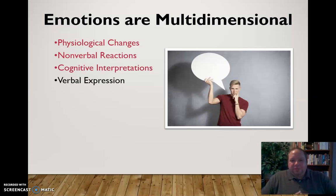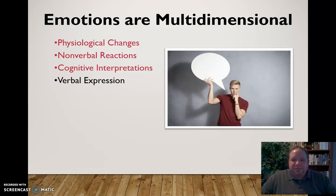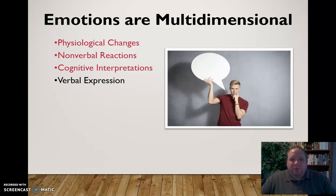And then finally we have verbal expression as well. We express ourselves verbally through emotion: 'I love you,' 'I'm angry with you,' 'I don't like that,' 'I'm upset right now' — all these different types of words we can use to express our emotions. So really all of these things combined go into emotion. Emotions are multidimensional — they impact our body physiologically, through nonverbal reactions, through cognitive interpretations, and through verbal expression.